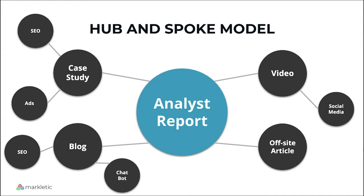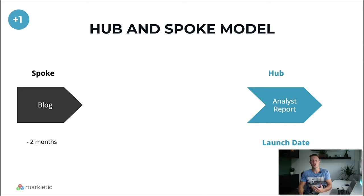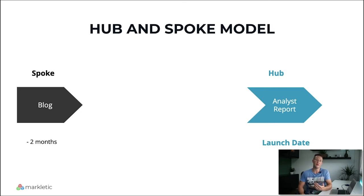So why is this content marketing strategy so powerful? The pieces of spoke content will be published before the hub content is launched. Let's say your hub content will launch on a certain date — two months before launching, you can publish a blog post related to your hub content. In those two months, your blog post will start gaining traction from search engines. As you know, SEO takes time, so launching a blog post in advance means it has time to ramp up the traffic.